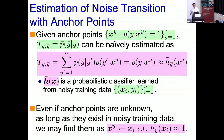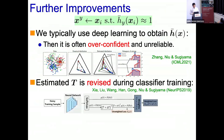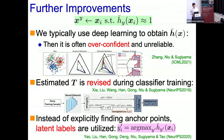Even if anchor points are unknown, if we can guarantee they exist in our training data, we may find them by choosing the point with probability closest to one. This is an approximate implementation but could be useful. However, when using deep learning, the classifier is often overconfident — even when the output is quite uncertain, deep learning gives it something like a near-perfect score. This is problematic here. We made some effort to improve it, but the problem was not really solved yet.